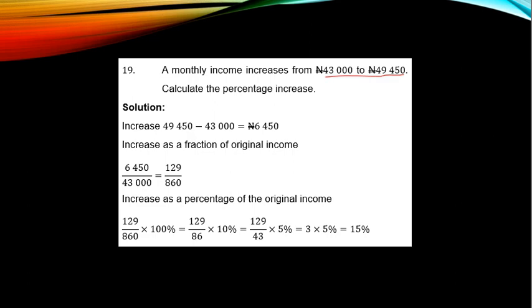How much was added to 43,000 to make it 49,450? So you obtain that amount, that is the increase, by subtracting the new amount from the original amount. The increase is 6,450. You express the increase as a fraction of original income: 6,450 over 43,000. When you reduce, you get 129 over 860.